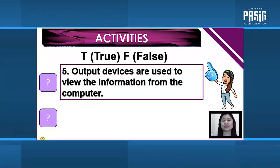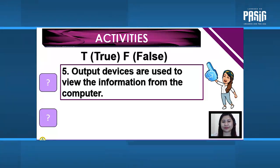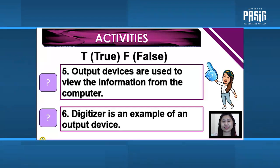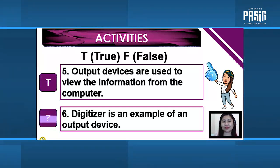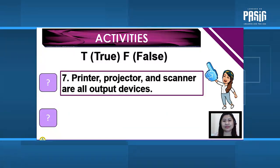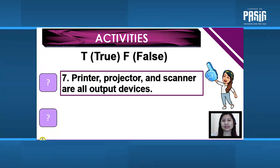Number 5: Output devices are used to view the information from the computer. Number 6: Digitizer is an example of an output device. Number 7: Printer, projector, and scanner are all output devices. Answers: 5 — True. 6 — False.